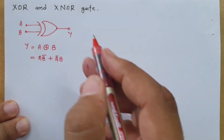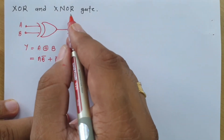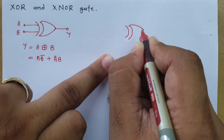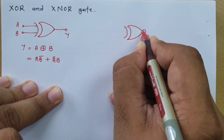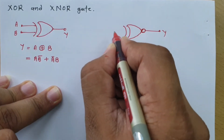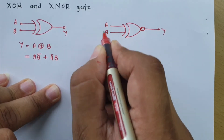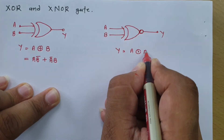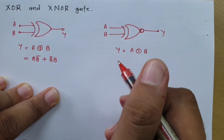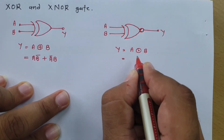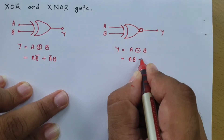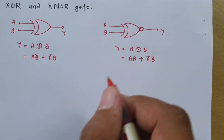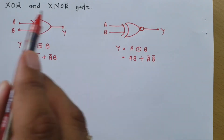Now let us see the XNOR gate. XNOR gate is the complement of XOR gate. When you see the symbol, you will find there is a bubble in front of the XOR gate symbol — this indicates it is the XNOR gate. These are my two inputs A and B. Mathematically, XNOR means Y equals A XNOR B. Another way of representing it is A·B plus Ā·B̄. This is another way to represent the XNOR gate, and as mentioned, XNOR is the complement of XOR.